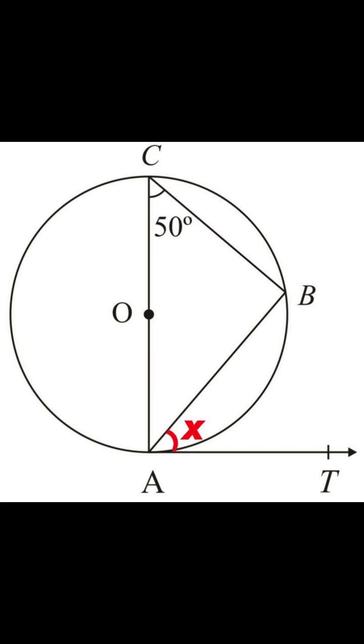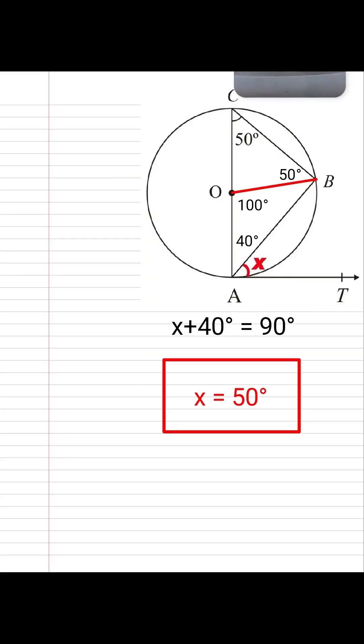So the correct answer is 50 degrees. But why? It is because the alternate segment theorem. This theorem tells us the angle between a tangent and a chord equals the angle in the opposite segment. In this case, angle X equals angle OCB, which is 50 degrees.